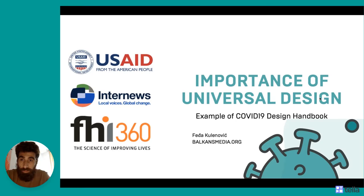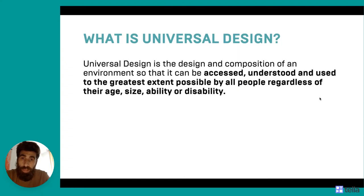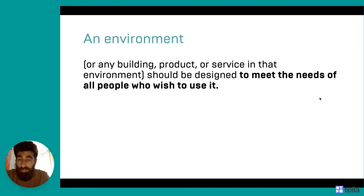So what is universal design? The definition says that universal design is the design and composition of an environment so that it can be accessed, understood, and used to the greatest extent possible by all people regardless of their age, size, ability, or disability. This means that this environment — also a building, product, or service — should be designed to meet the needs of all people who wish to use it, regardless of who they are and what their abilities or disabilities are.